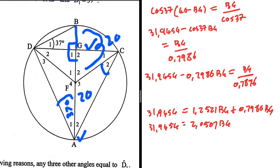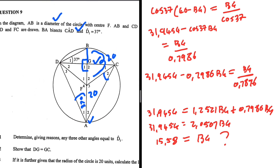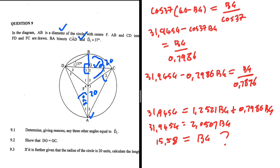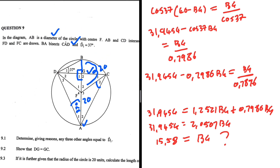BG is approximately 15.5 units. Let me know in the comments if you got the same answer for 9.3.